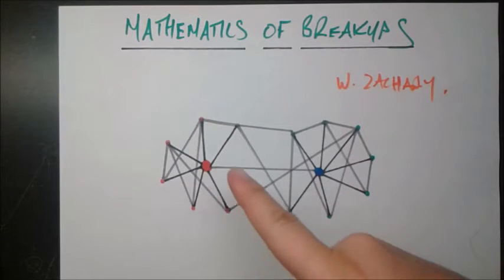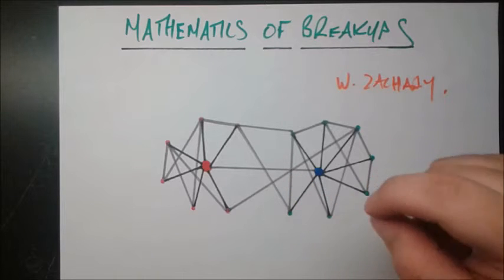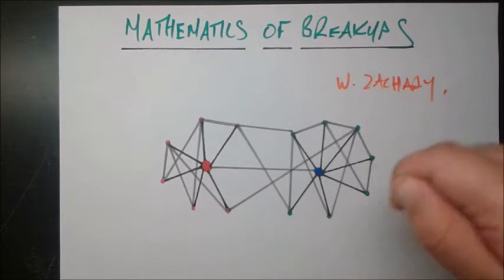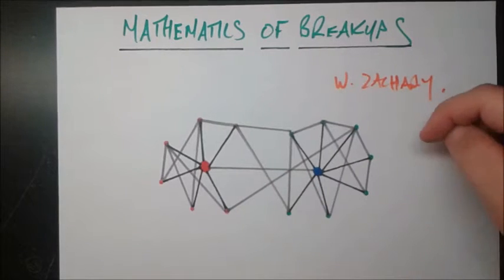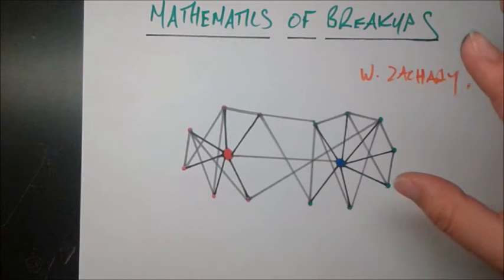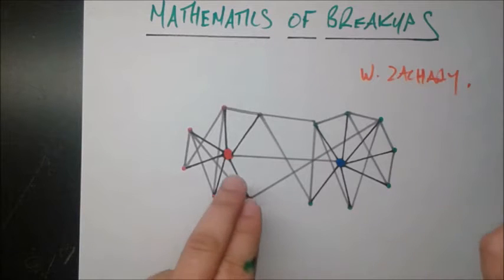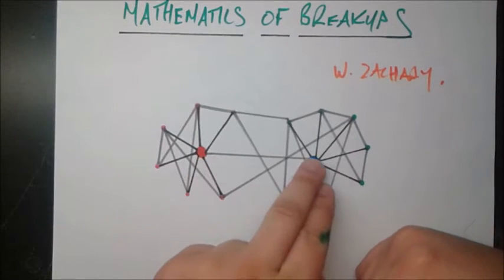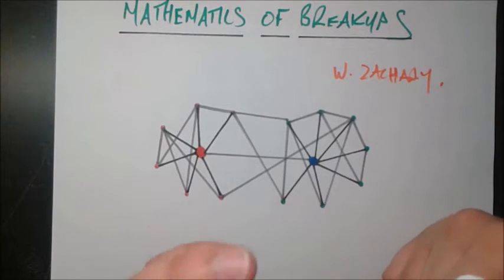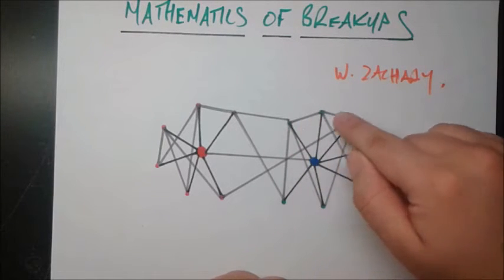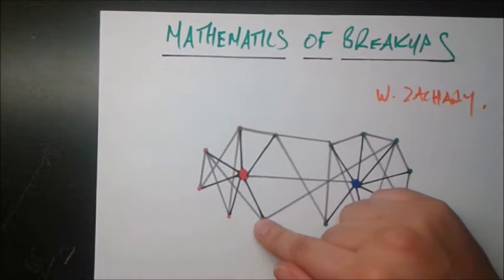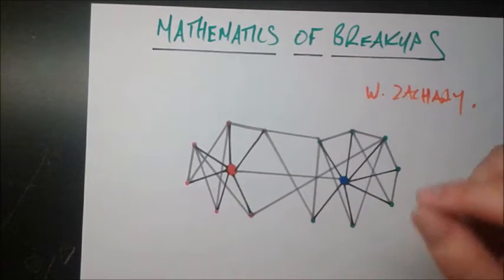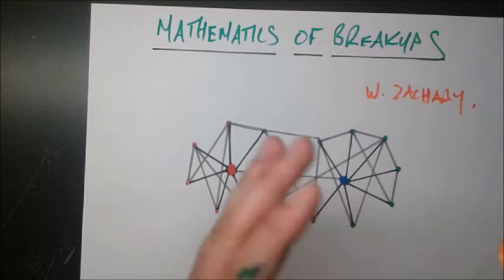It seems kind of obvious - maybe I've suggested it by drawing these two leaders kind of big - but even without that, it seems our intuition that these two people, let's call Mr. Red and Mrs. Blue, would be the leaders of the two separate groups. The people they would take with them would be, for Mrs. Blue, all these green people on the outside, and Mr. Red, all these pink people on the outside.